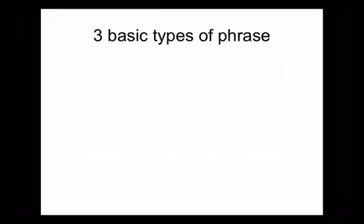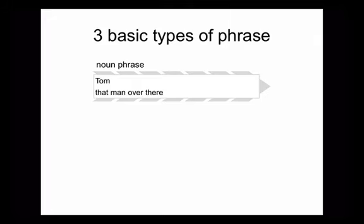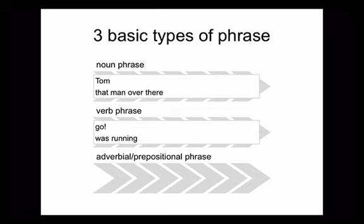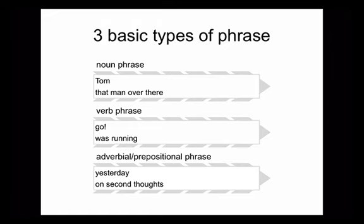We need to clarify what phrases are. In English, at least, there are three basic types of phrase. There's the noun phrase, which might be as simple as a name — Tom, Dick, Harry, Jane, Spot — or composed of more than one word, like 'that man over there' or 'that person you wanted to talk to'. Then we have the verb phrase, which can simply be a single word as in the imperative 'go', or composed of more than one word, like 'was running' or 'had been living'. And then we have adverbial phrases or prepositional phrases — single words like 'yesterday', as in 'I saw him yesterday', or prepositional phrases like 'on second thoughts' or 'on the left'. We can combine and nest these types of phrases to create ever more increasingly complex structures.